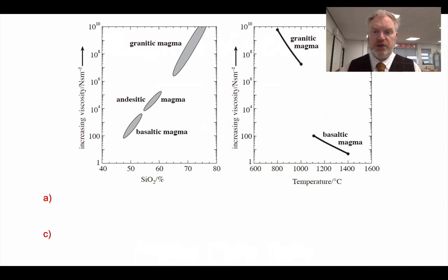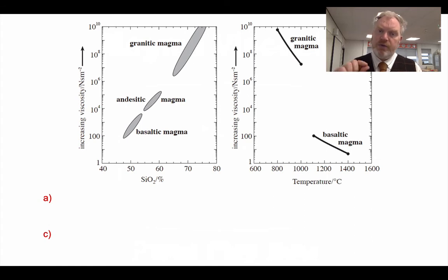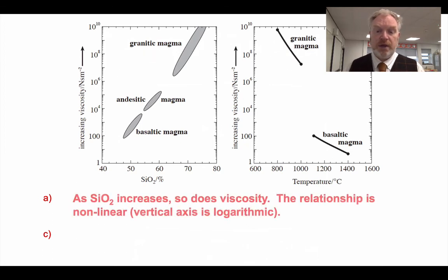Looking at the left-hand graph: the basic relationship is very obvious — the higher the silica content, the greater the viscosity. However, we need to be very careful with the axes. At first glance it looks like a linear relationship, but it's not. If you look at the vertical axis, it's a logarithmic scale, going up by powers of 10.